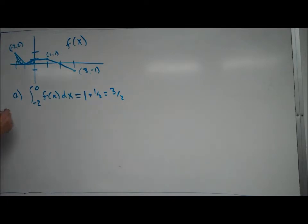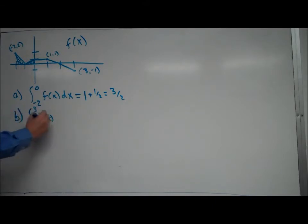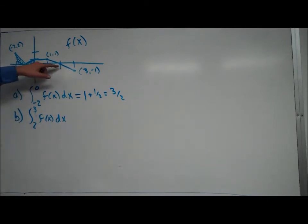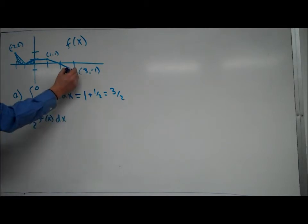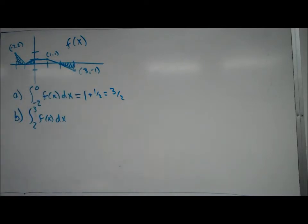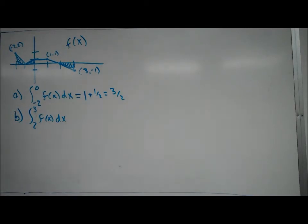Let's look at the integral from 2 to 3. Notice the graph of f of x goes below the x-axis here at 2 and is below from 2 to 3. Now, this is still definitely related to the area under the curve — meaning this area right here from 2 to 3. But whenever it's below the x-axis, it's going to come out negative. That's how it works if you had an actual function below the x-axis and evaluated it using the fundamental theorem of calculus — your answer would come out negative.